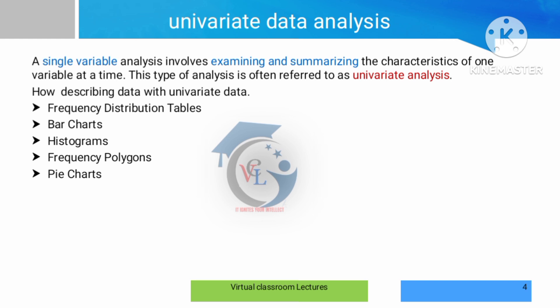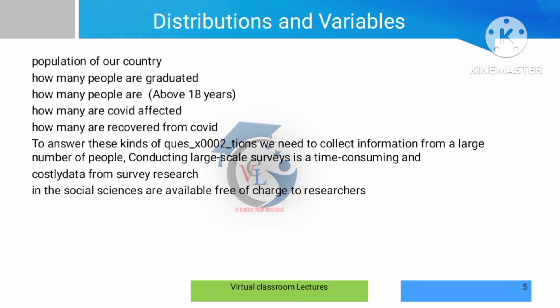Univariate analysis uses a frequency distribution table — a table of value presentations — to reach conclusions. Visualization tools used include bar chart, histogram, and pie chart, all applicable for single variables.